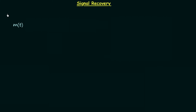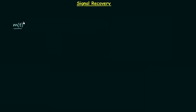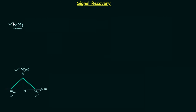We understand the process of sampling. In this process we try to sample a continuous time signal whose example waveform you can see on your screen. This continuous time signal we call the message signal, represented by MT. We have considered this message signal MT to be a band limited signal, and therefore its Fourier transform M(ω) will be limited — it is nonzero from minus ωm to plus ωm, where ωm is the maximum frequency component of the message signal MT.